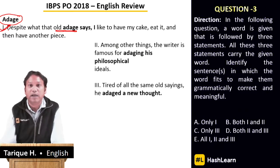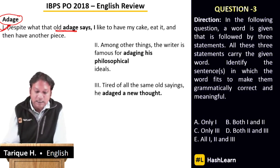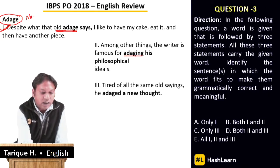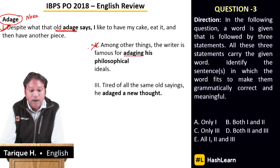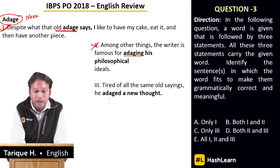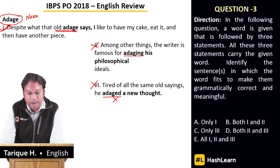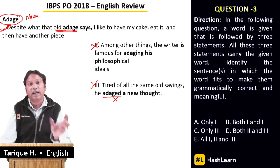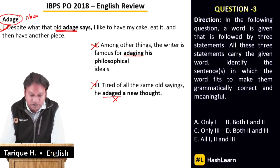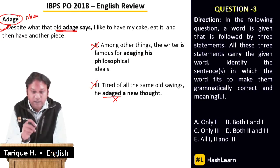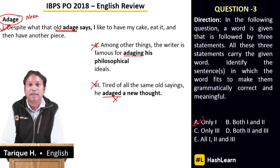The second sentence uses 'adaging' — but adage is a noun and cannot be used as a verb, so that is grammatically incorrect. The third sentence: 'He adaged a new thought' — again using adage as a verb, which is wrong. Also, we cannot say 'new adage' because an adage is by definition an old saying. Therefore the right answer is A — only sentence one uses the word adage correctly, both grammatically and meaningfully.